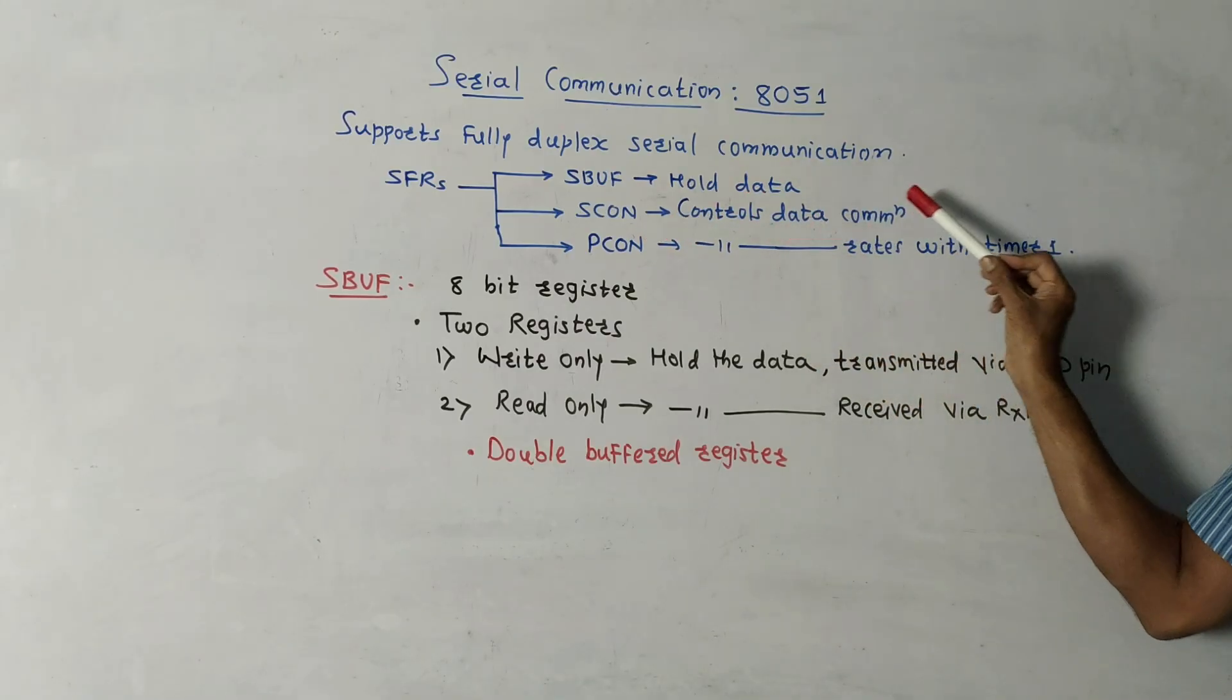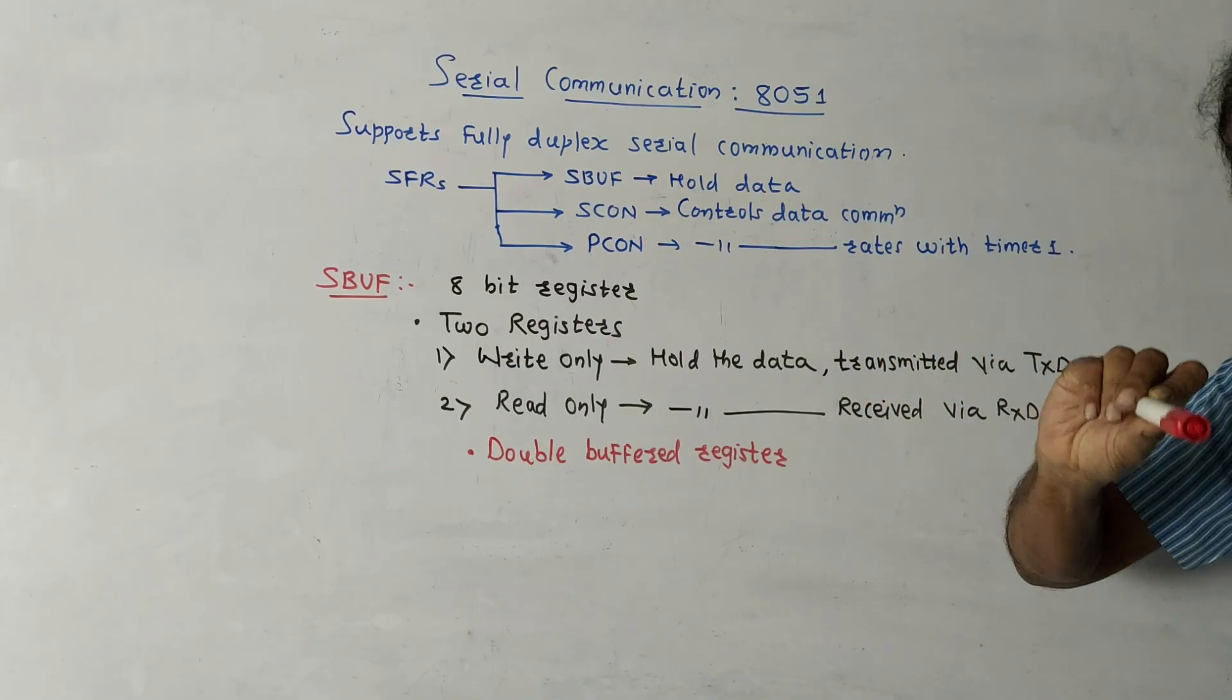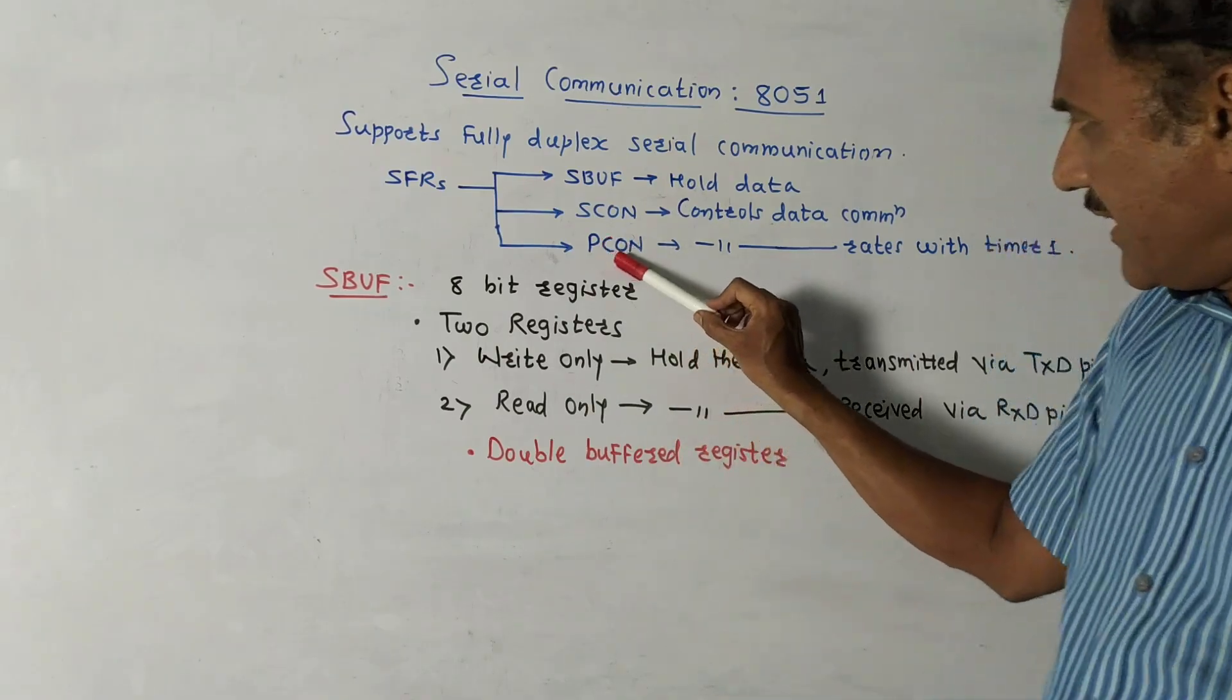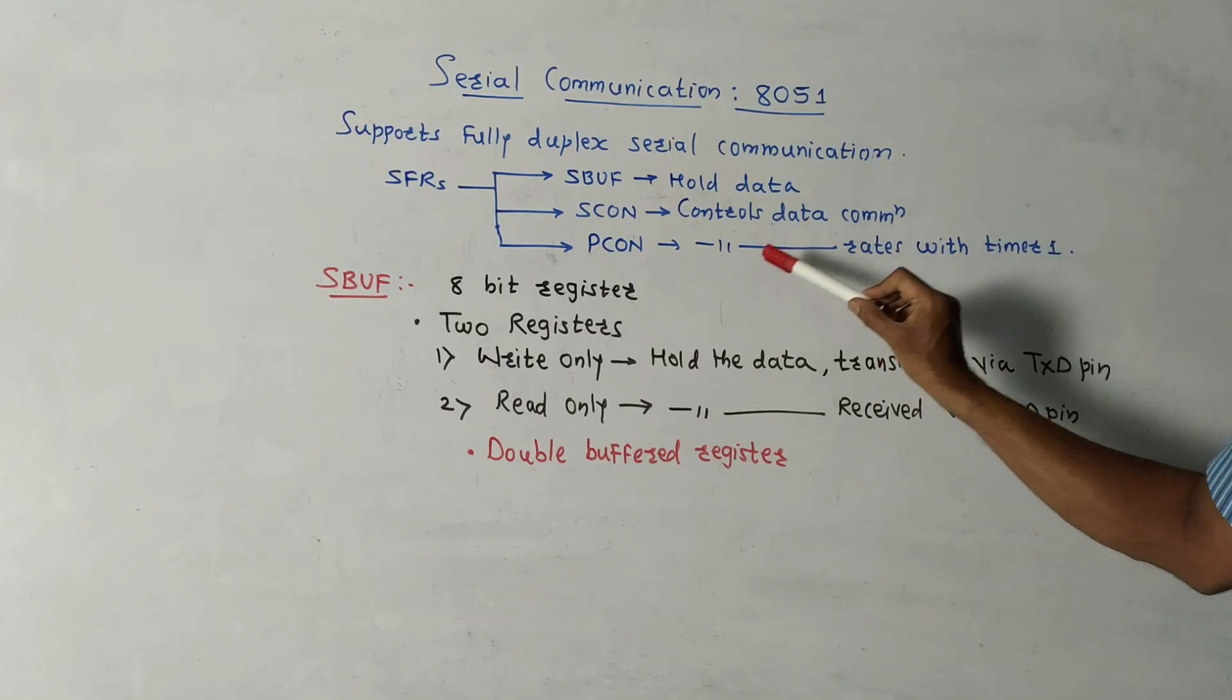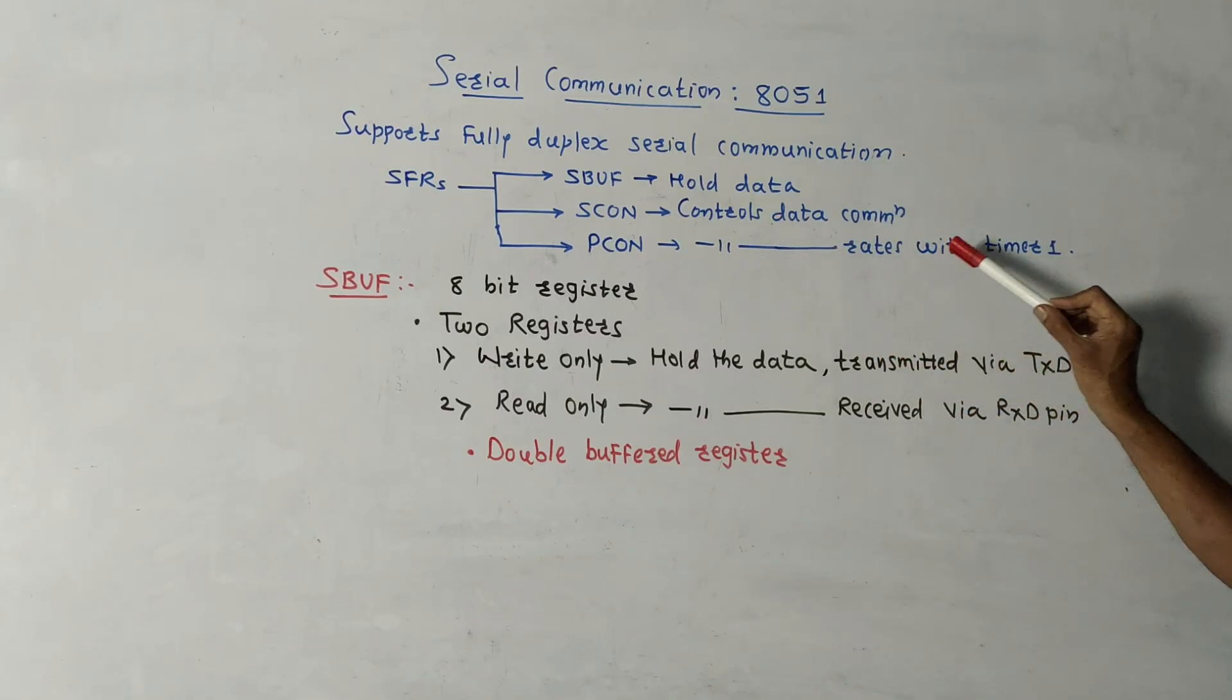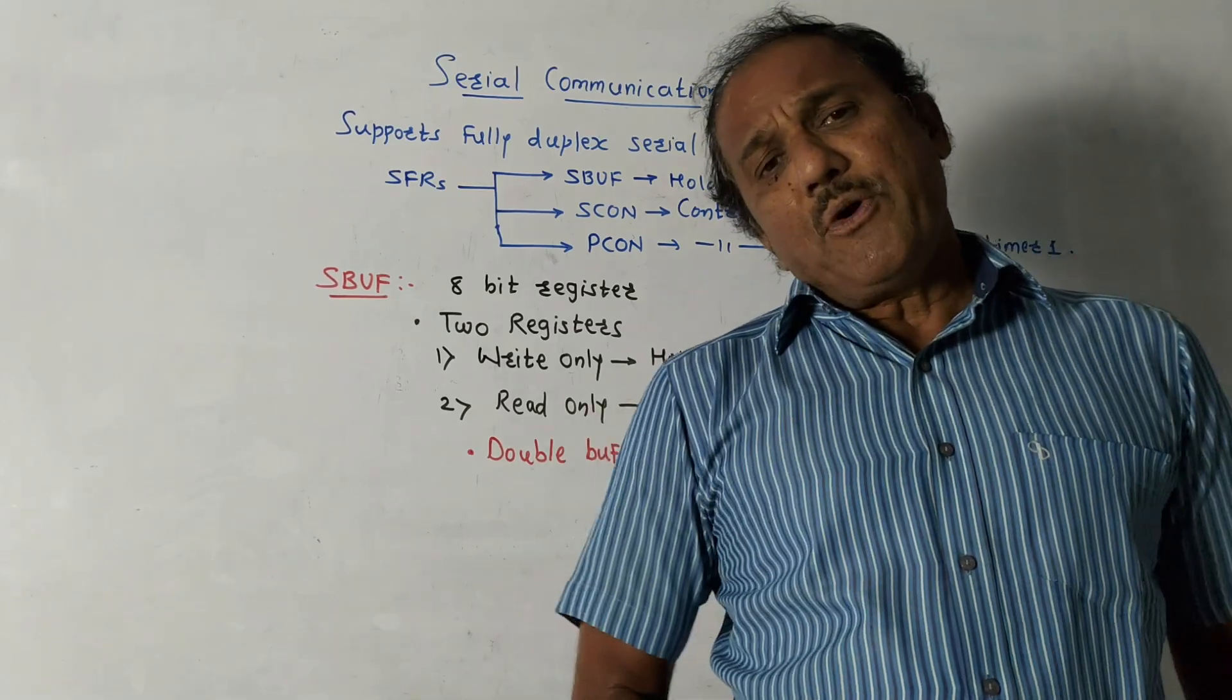Third is power control register, PCON. It is used to control the baud rates along with timer number one.